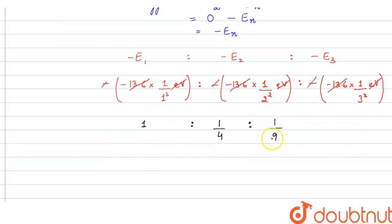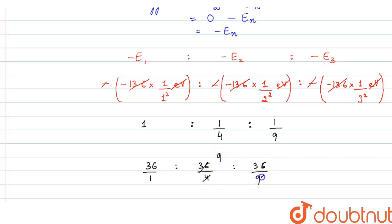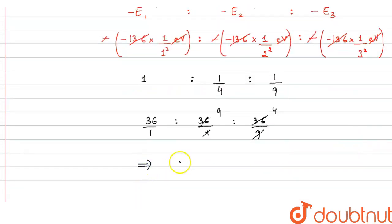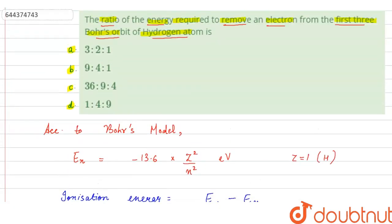Now we have to simplify this. We know that the LCM of 4 and 9 is 36, so we multiply by 36. We get 36/1 : 36/4 : 36/9, which simplifies to 36 : 9 : 4. So the simplified ratio is 36:9:4, and the answer is option C — 36:9:4.